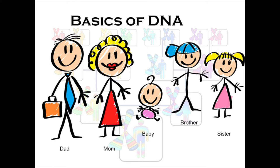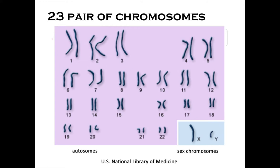We have those 23 pairs of chromosomes that we inherit. Twenty-two of the pairs are what we call autosomal chromosomes — they recombine, so with every child that's born they will get part of their DNA from mom and part from dad, but not exactly the same parts. Then we have our 23rd pair of chromosomes, which is the sex chromosome — the X and the Y. Those 22 autosomal chromosome pairs are what we're going to talk about today.